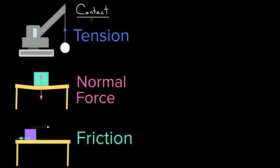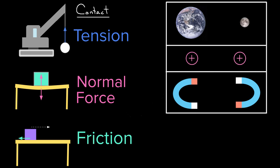So these contact forces are to be distinguished from long-range forces. Sometimes these are called action-at-a-distance forces because they can be exerted on objects that are far away from each other. Gravity's a common example. The Earth can exert a gravitational force on the Moon even though the Earth and the Moon aren't touching. So that's a long-range force.